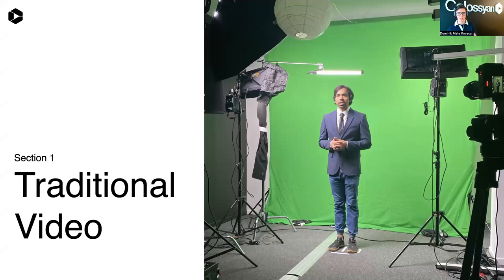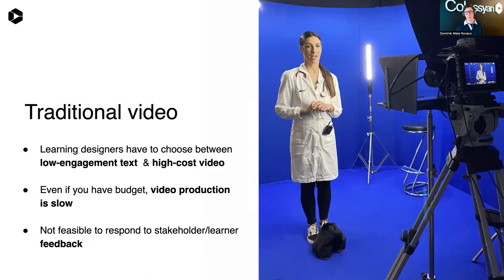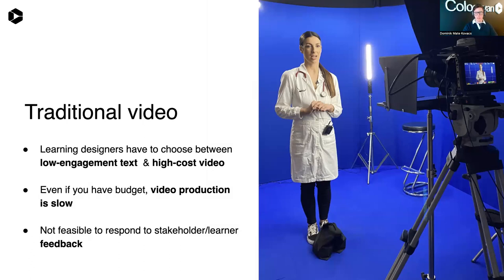On this image we see a traditional setup with very expensive cameras, microphones, and lighting. As we all know, learning designers have to choose between low-engagement text or high-cost video, because it's really not that scalable to create such content. Even if you have the budget, the process is slow, and the iterative aspect of it — it's really hard to gather feedback from stakeholders and learners and create new content accordingly. Traditional video definitely has its benefits. The market understands that with video you can learn much better because the engagement rate is higher. But with text, you don't need any of these complex procedures.